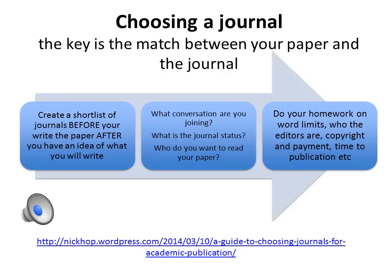Many people have questions about choosing a journal, and absolutely the most important thing is the fit or the match between the paper that you want to write and the journal you want to publish in. A great paper sent to the wrong journal will get rejected. I suggest you create a shortlist of journals before you write your paper but after you have an idea of what you're going to write. You're thinking: what conversation are you joining? Most journals will not want to accept a paper that's the first paper ever in that journal to address a particular issue — you want to be showing that you're joining an ongoing conversation that's happening in that journal.